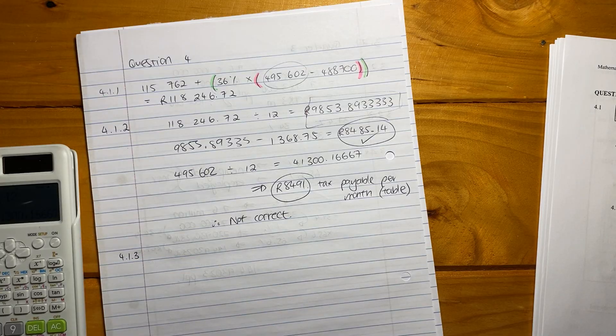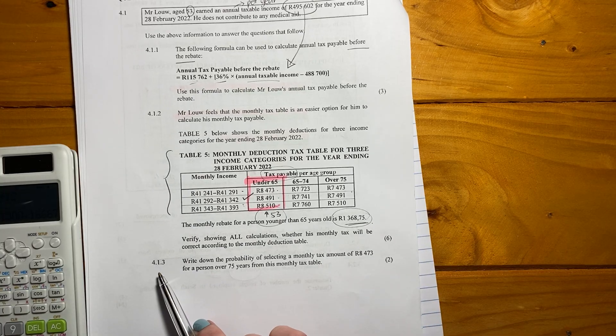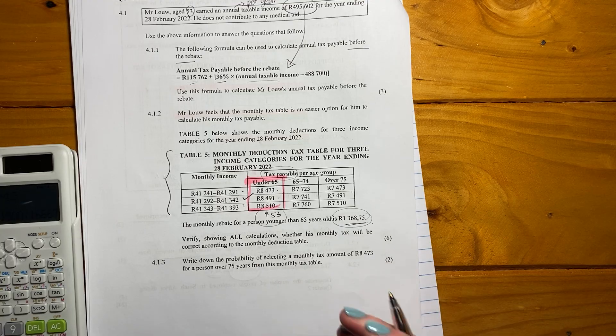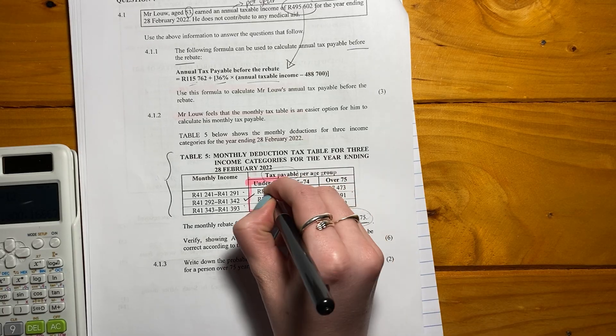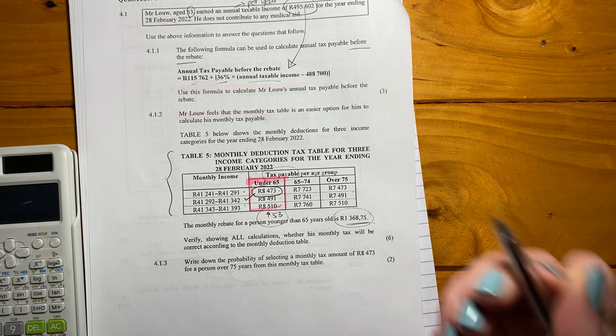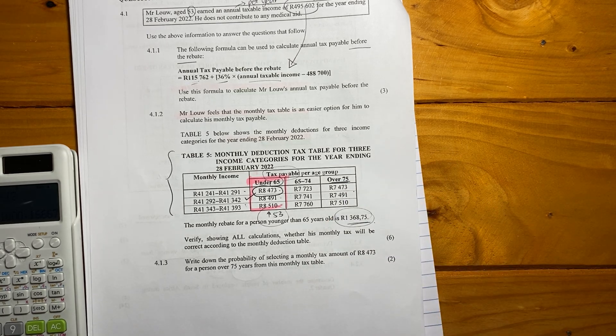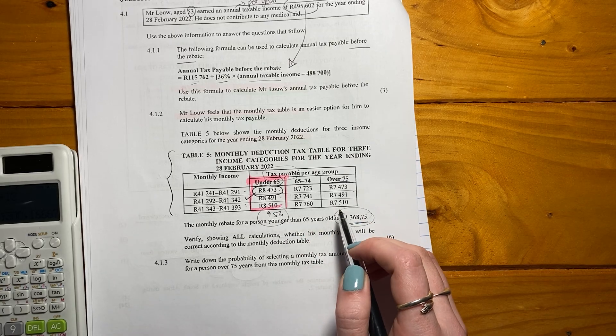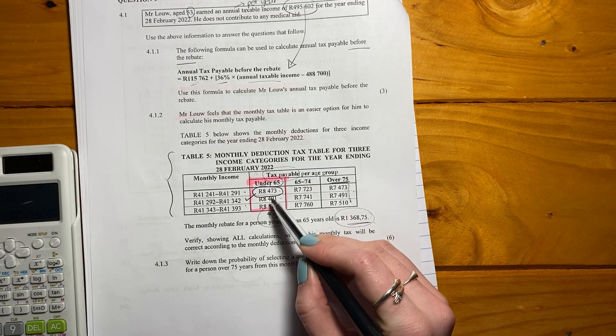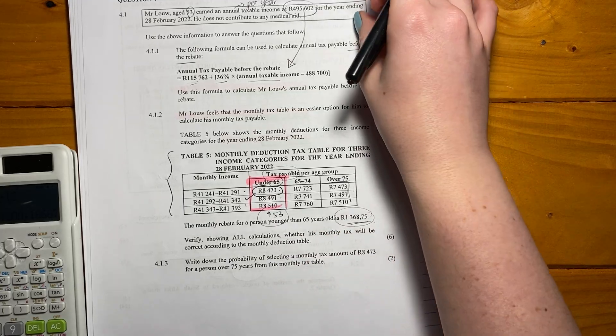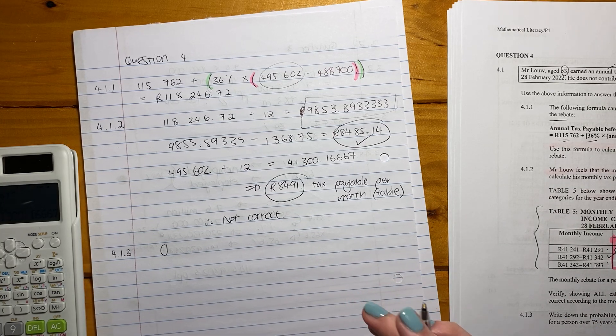So that was a little bit of a tricky question because it wasn't always obvious what was asked, but I'm hoping that this gave a little bit of clarity. Let's now look at the last question for this video. Write down the probability of selecting a monthly tax amount of 8473 for a person over the age of 75 from this monthly tax table. So here is the 8473, but it's only for people under the age of 65. It's not for people over the age of 75. So actually, the probability of getting 8473 and being over 75 is zero. It's impossible. You can't get it. If you're over 75, this is what you get, one of those three. But you can't get 8473 unless you're under 65. So your answer there is zero. It's a little bit of a trick question, but I hope you understand the logic there. That's us done for this video. Let's move on to the next part of question four.